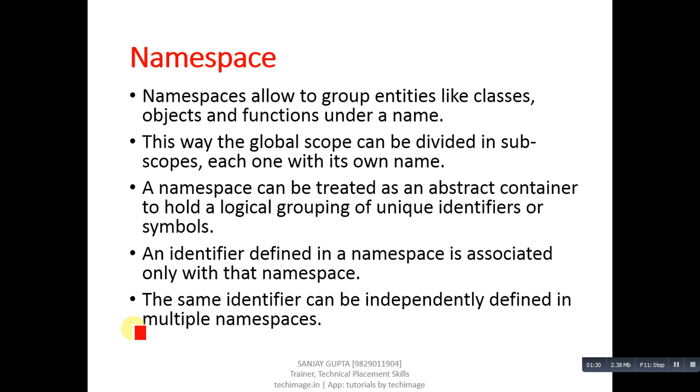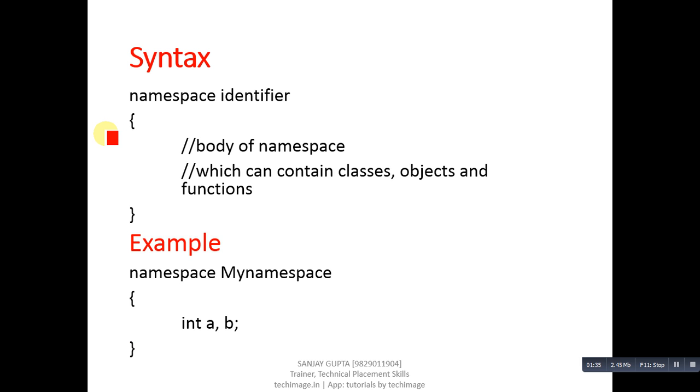This is the syntax of namespace. First, you have to use the namespace keyword, then an identifier. This identifier will be known as the namespace name, then the body of namespace which can contain classes, objects, and functions. This is an example of namespace. Namespace is a keyword, and my_namespace is the name or identifier of the namespace. It is containing two variables. We can also define classes and functions inside this namespace.